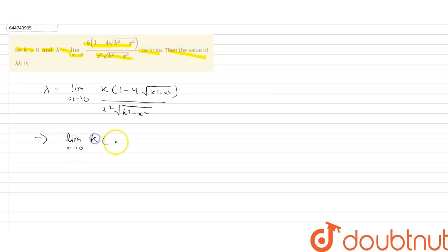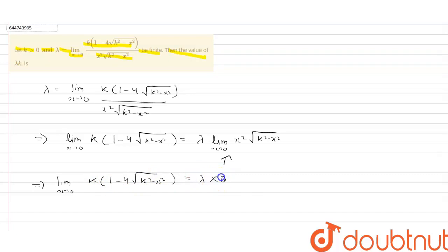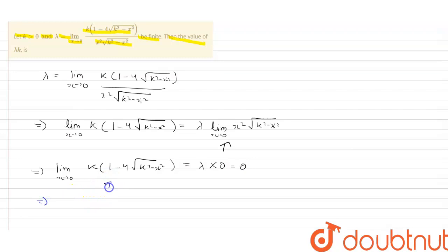So lambda is equal to limit x tends towards 0, k into 1 minus 4 root of k squared minus x squared, upon x squared into root of k squared minus x squared, exists. Therefore this implies limit x tends towards 0 of k into 1 minus 4 root of k squared minus x squared equals 0. Putting the value of the limit, we get k into 1 minus 4k equals 0, or k equals 1 by 4.